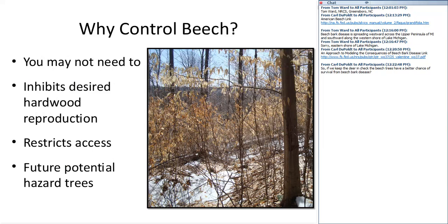Why do we want to control beech? You may not need to — you need to consider all the angles and your particular ownership objectives. Typically, you would want to control it if you're trying to regenerate other hardwood species, or if you have access issues. Maple producers are a good example — if they're trying to install maple tubing or use buckets to collect sap, beech thickets, as pictured here, are an unpleasant place to carry a bucket of sap or drag tubing. These also present potential hazard trees that have died because of the disease.